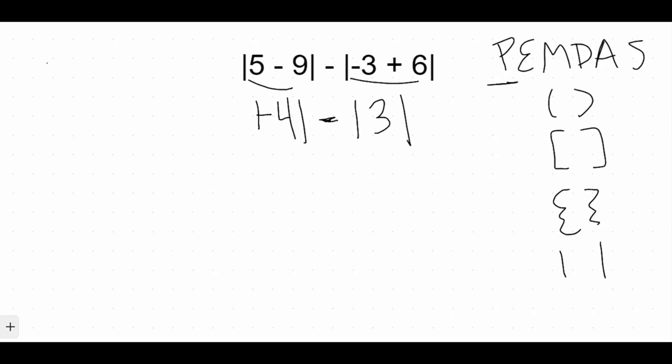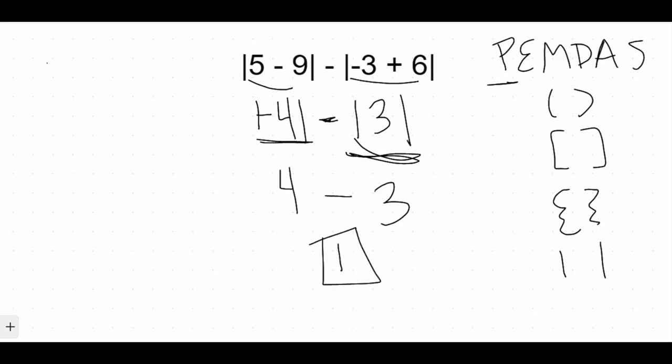Now that we're done simplifying within the absolute value bars, we actually need to take the absolute value. Absolute value is the distance a number is from 0 on the number line — or a much easier way to think about it is that absolute value bars make things positive. So the absolute value of negative 4 is 4, and the absolute value of 3 is 3. Dropping down the minus sign, our final calculation is 4 minus 3, which is 1. So 1 is our final answer for this problem.